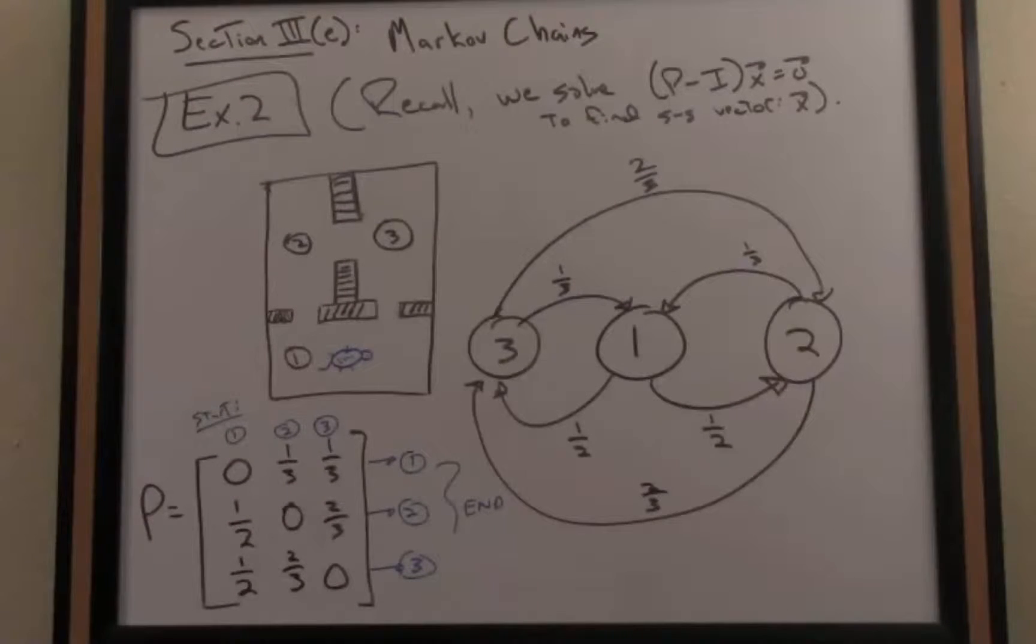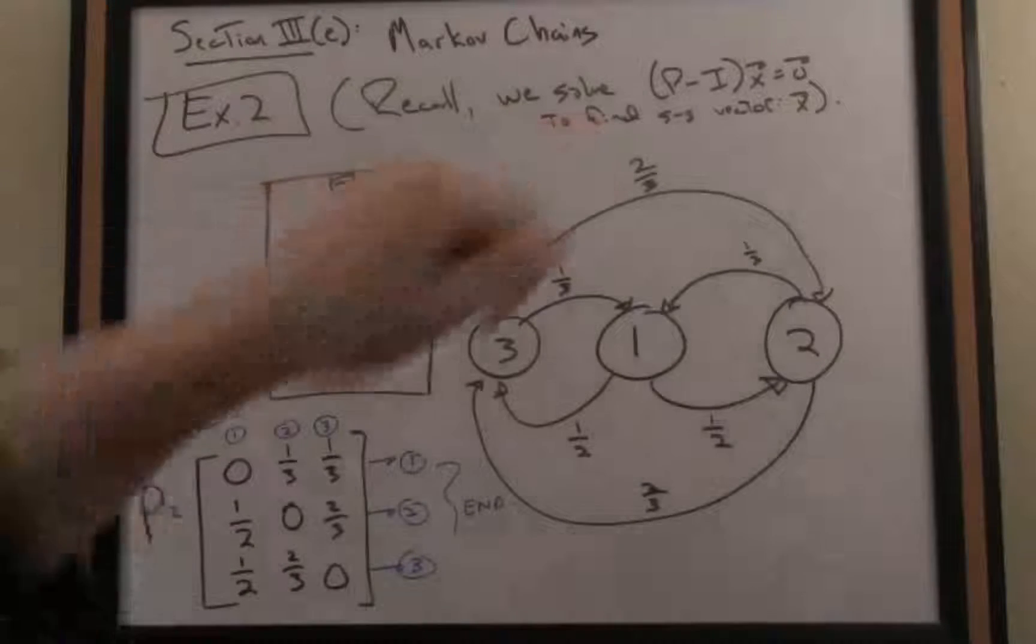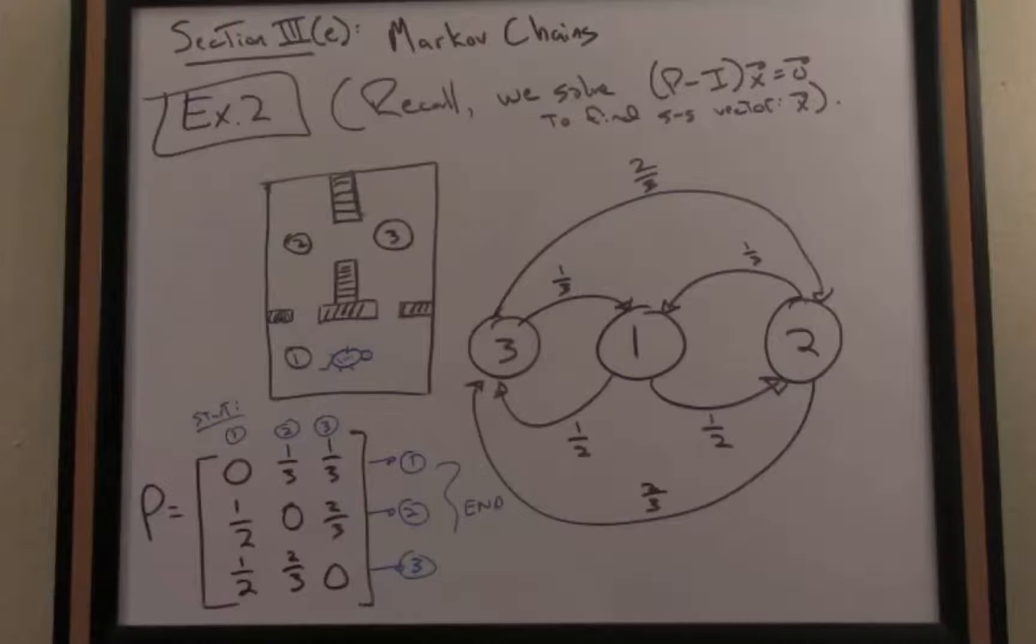Now the question we want to answer is, what happens as time marches on? Can we get a sort of cognitive blueprint of the long-term thinking, or the long-term behavior of the mouse in the maze? To answer that question, we're going to solve for the steady-state vector with respect to the stochastic matrix.